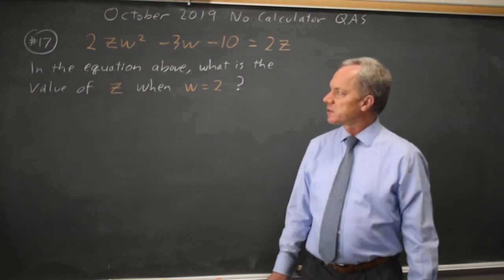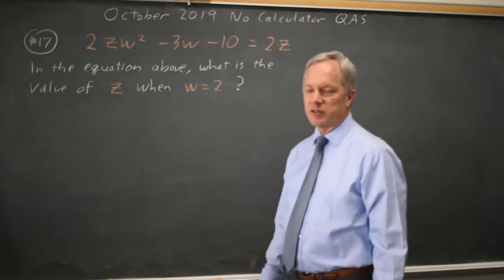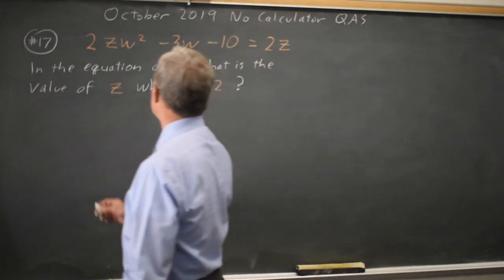This is question 17. The College Board gives us an equation with two variables and asks us to solve for z given a value for w. So I'm going to substitute in the given value for w.